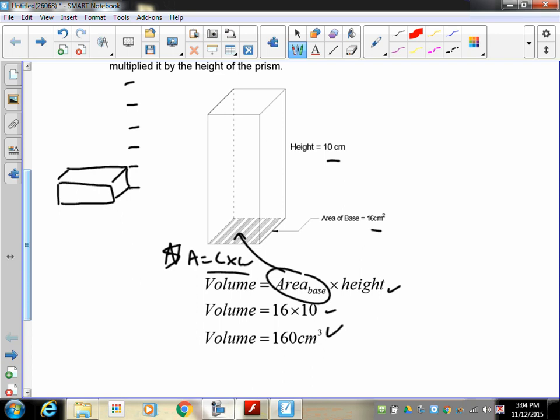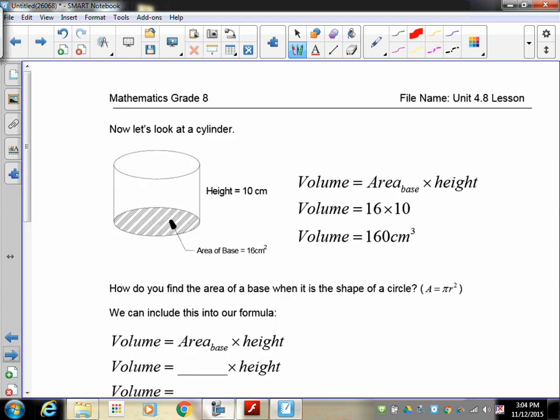The only difference between this one and doing the cylinder is that the base is going to be a circle. It's like that. So if I tell you the area of the base is 16 and it's a circle, all you do is the same thing.